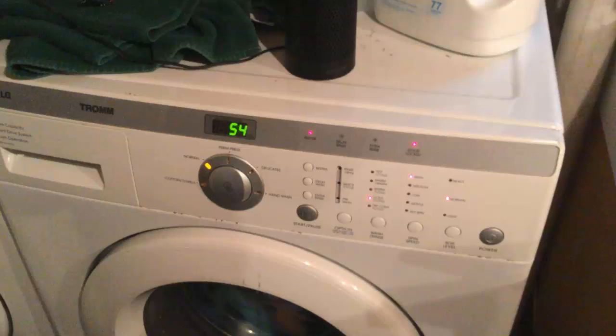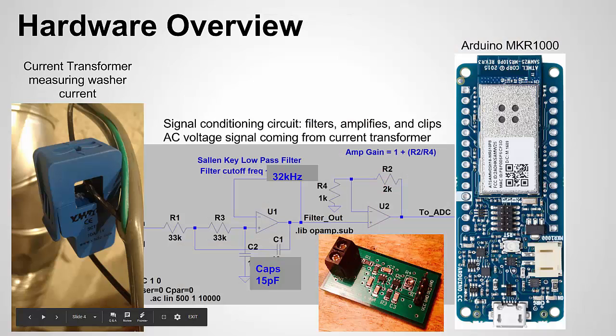Let's look at the hardware setup in more detail, because the measurement was actually one of the tough parts of this project. Here's a closer look: the current transformer around the black wire of the washer cord, the signal conditioning circuit, and the Arduino Maker 1000.